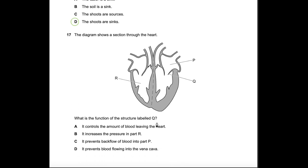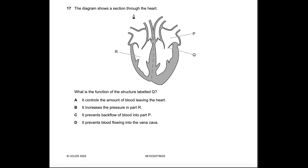Question 17: The diagram shows a section through the heart. What is the function of structure Q, which is a valve? It does not increase pressure or control the amount of blood leaving the heart. Valves prevent backflow. It prevents blood flowing back into the left atrium — part B in the diagram. Answer: C.